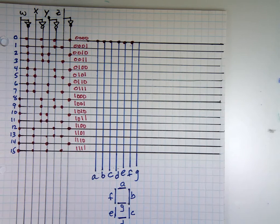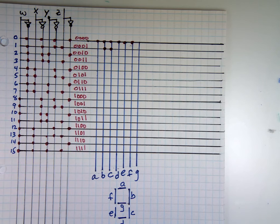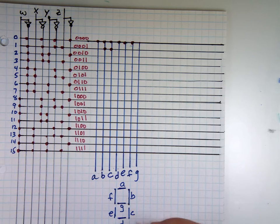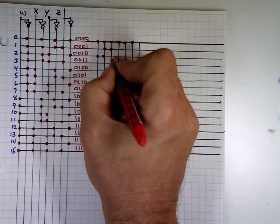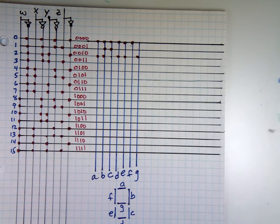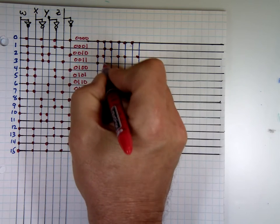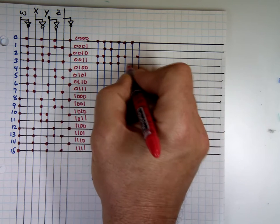For the digit 1, you want B and C on — the other ones are not connected. For digit 2, everything is on except F and C: segments A, B, D, E, and G. For digit 3, everything is on but F and E: segments A, B, C, D, and G.